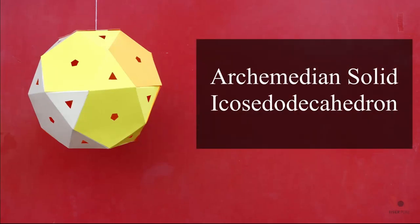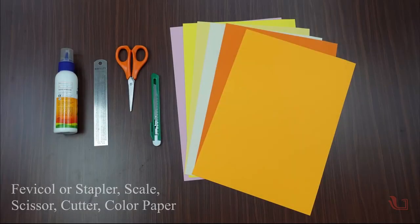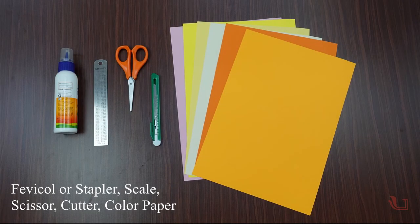Today we will learn how to make an icosidodecahedron Archimedean solid. For that we need some colored paper, scale, glue or stapler, scissor, cutter, etc.